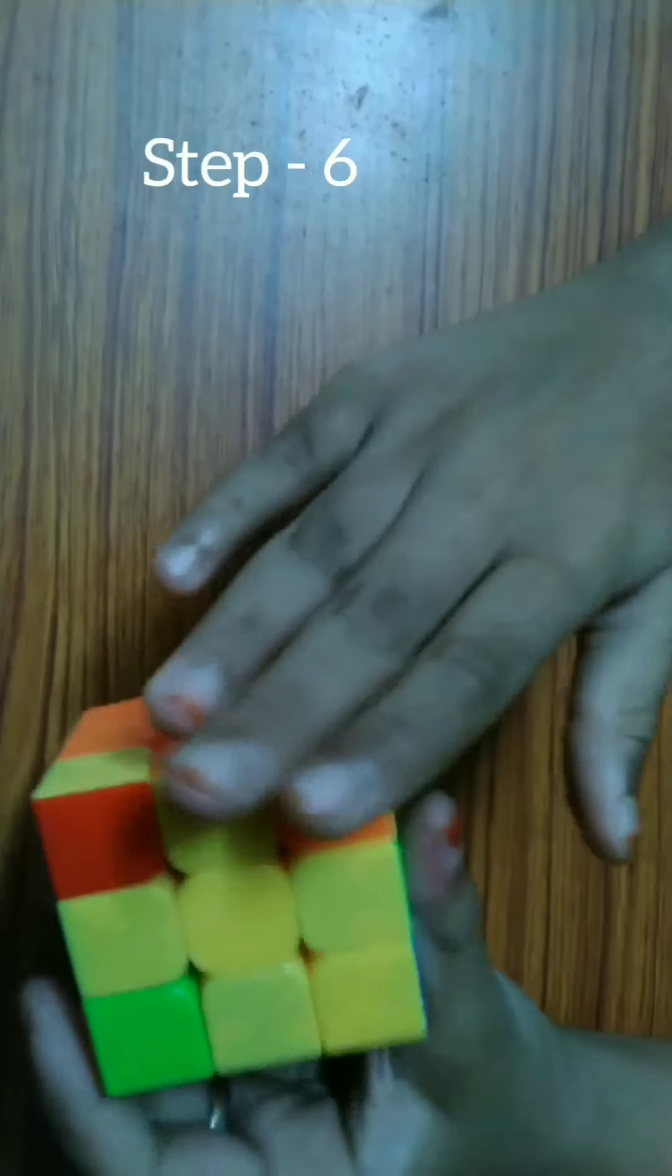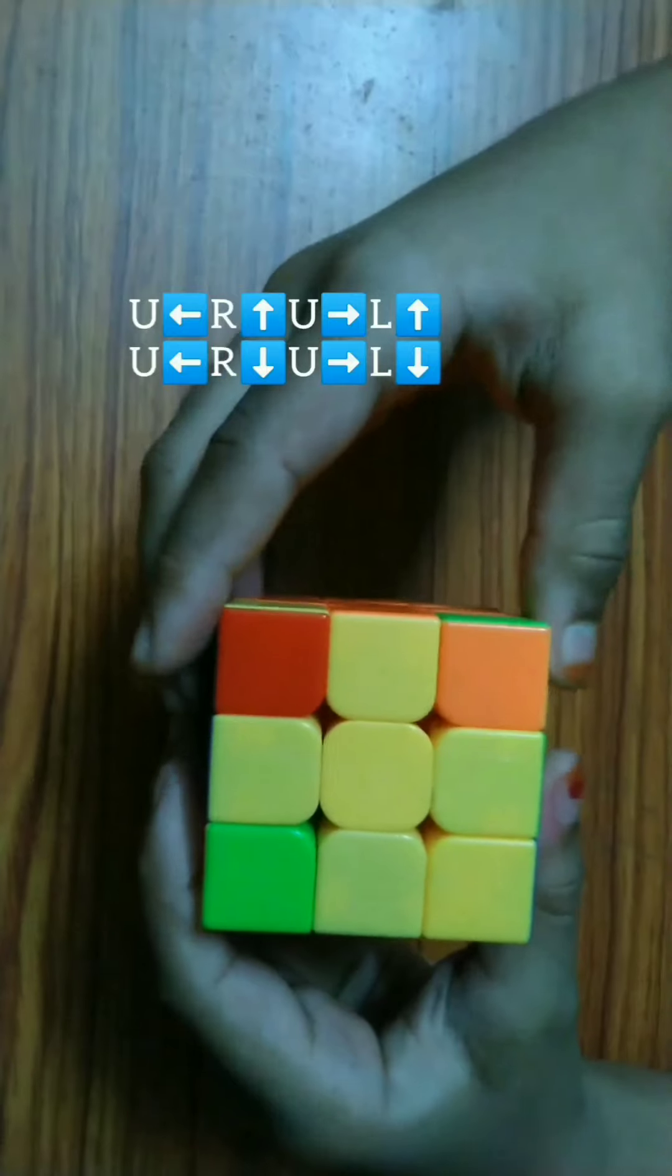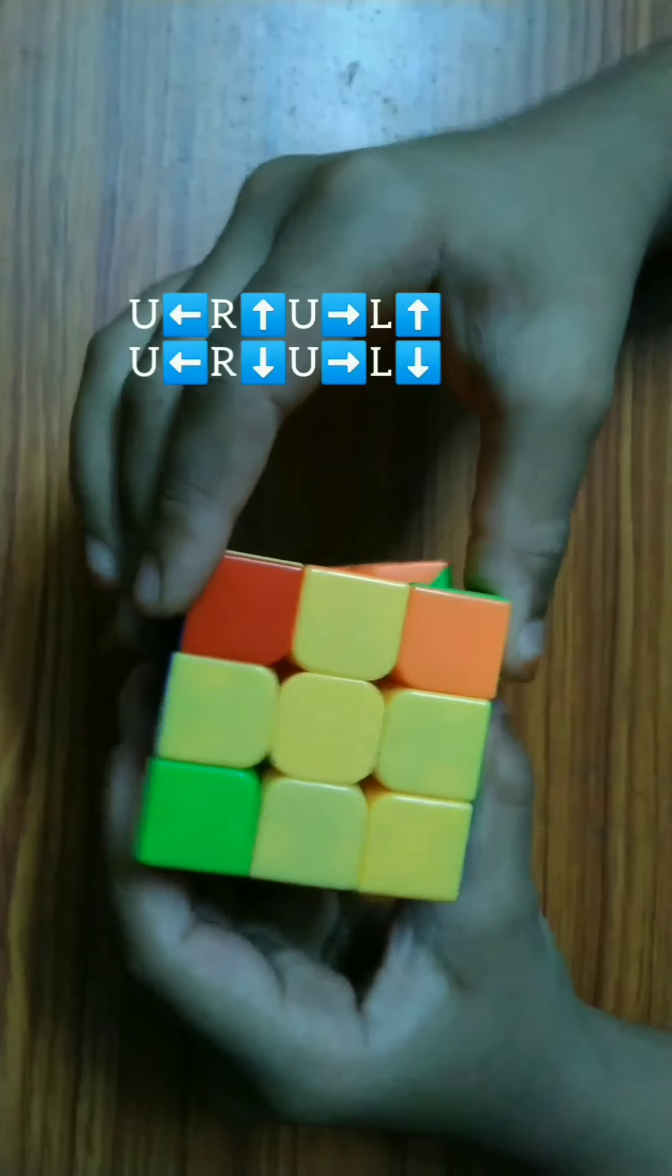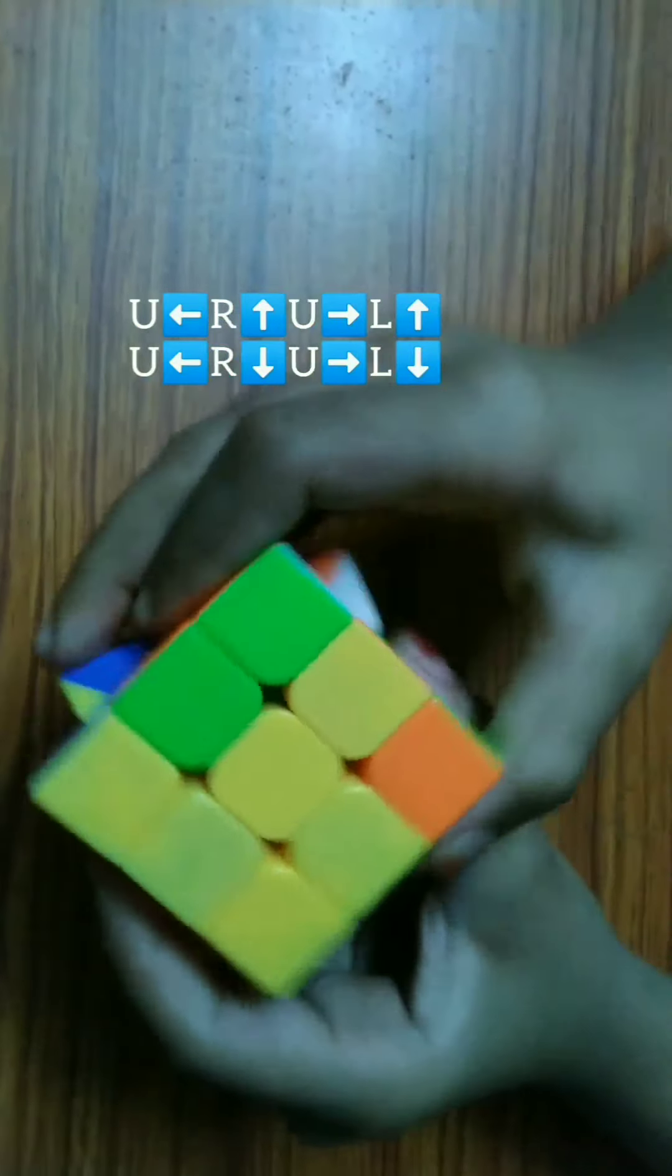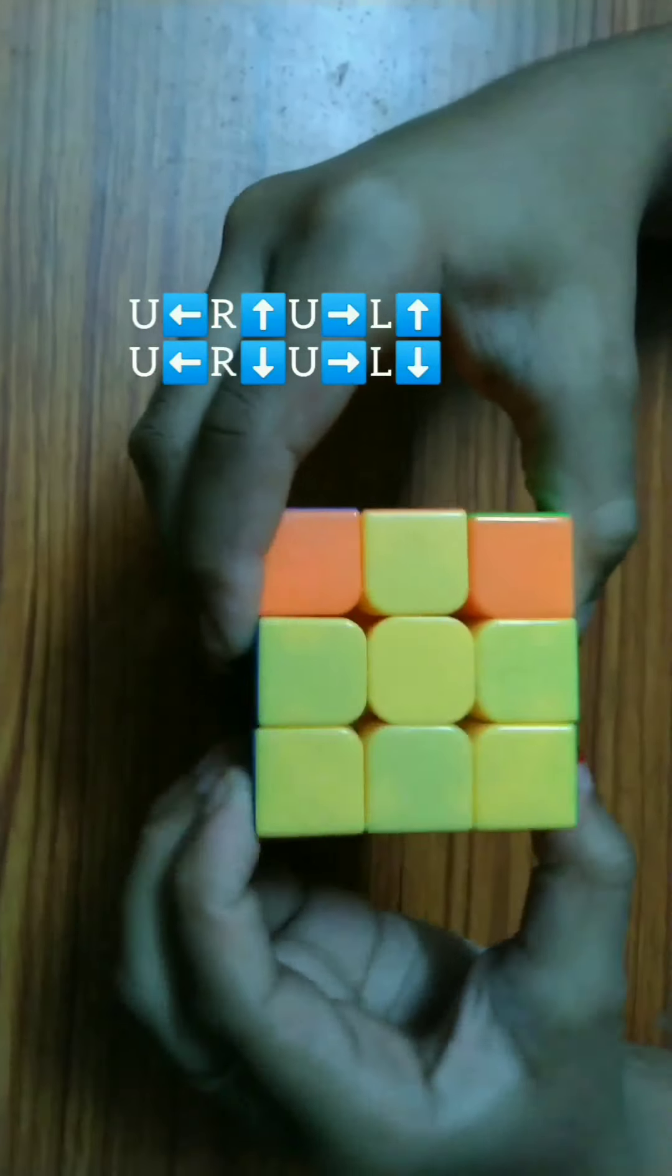So, place the correct one on the right and do this formula. Up, up left, right up, up right, left up, up left, right down, up right, left down.